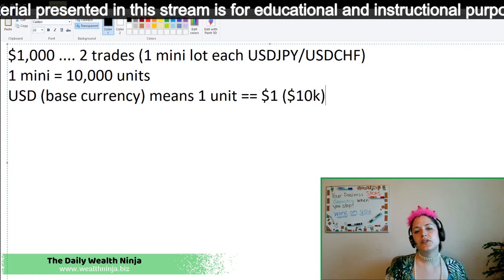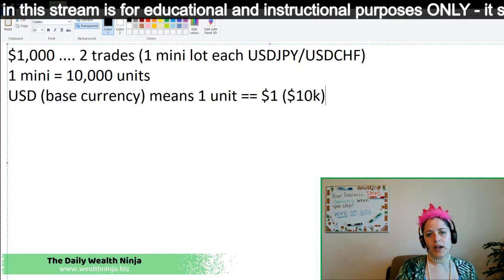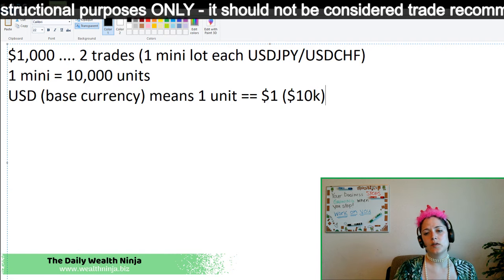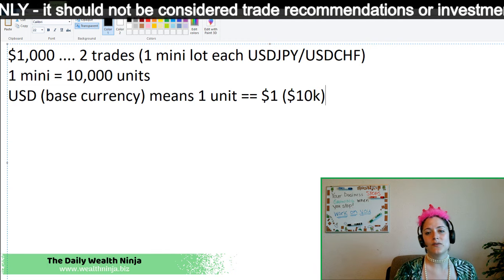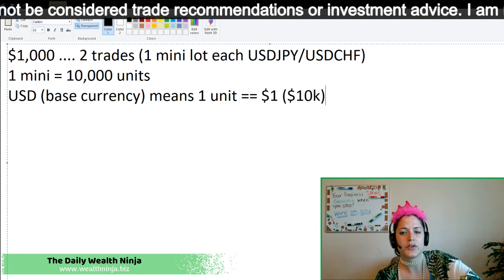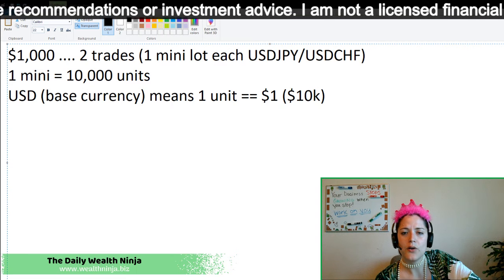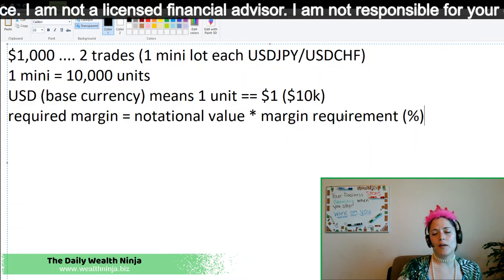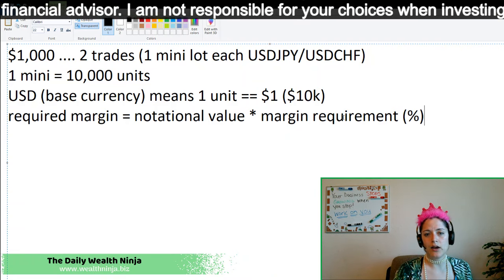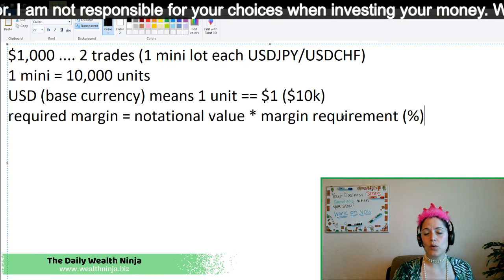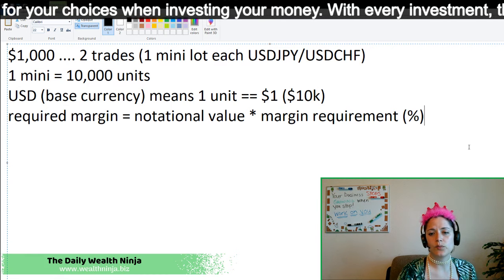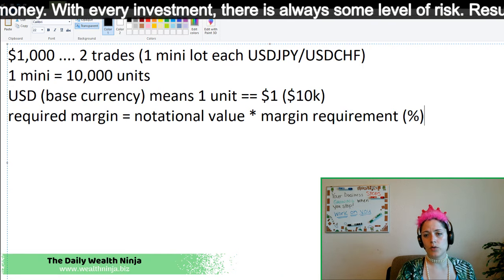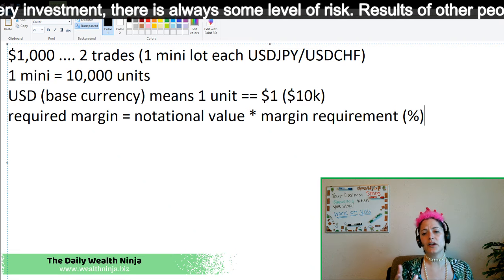Your base currency is the currency on the left side of your pair. Since we're using the US dollar as our base currency, one unit is equivalent to $1 on a mini lot, which is equivalent to 10K for that trade. Now, as we discussed before, your required margin — which is the amount of money you have to have available in your account in order to place or continue a trade — is your notional value times your margin requirement percentage. We talked about this in our last video. Your notional value is 10K.